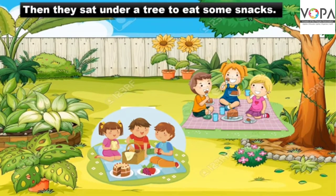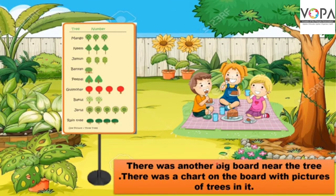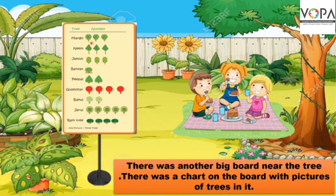Then they sat under a tree to eat their snacks — बच्चे एक درخت کے نیچے بیٹھ گئے کھانے کے لیے۔ There was another big board near the tree. There was a chart on the board with pictures of trees in it — وہاں پر انہیں قریب میں ہی ایک اور بڑا تختہ نظر آیا۔ دरختوں اور ان کے ناموں کی فہرست وہاں لگی ہوئی تھی اور وہاں پر جتنے بھی درخت تھے ان کے نام اور ان کی تعداد وہاں پر لکھی گئی تھی۔